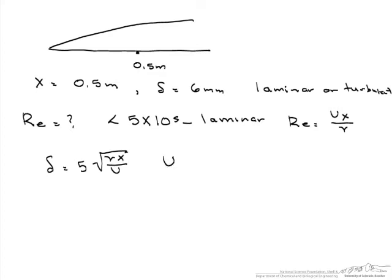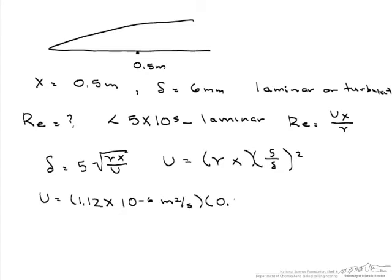So we rewrite this as u equals the kinematic viscosity times x times 5 over delta squared. When we put in our numbers, here is our kinematic viscosity, 1.12 times 10 to the minus 6 meters squared per second, and our x which is 0.5 meters, and our 5 over 6 times 10 to the minus 3 meters squared, we come out with a velocity of about 0.39 meters per second.